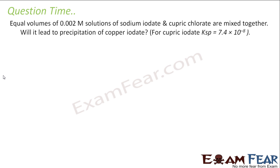We will take some questions here. Very good question says that equal volumes of 0.02M solutions of sodium iodide and cupric chloride are mixed. Will it lead to precipitation of copper iodide? First thing we should note: let us suppose 1 liter of sodium iodide and 1 liter of cupric chloride is mixed.